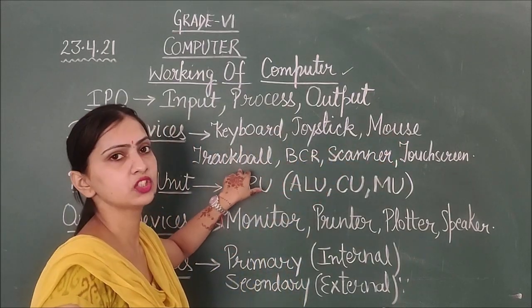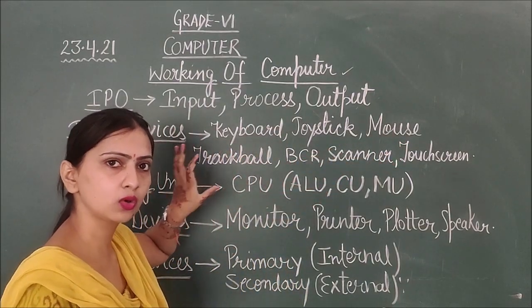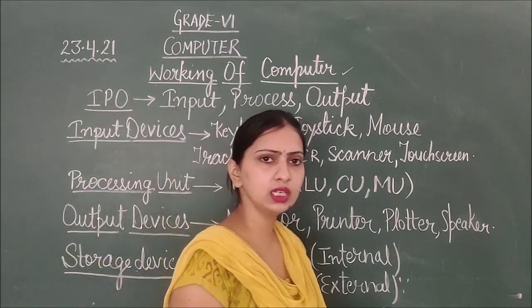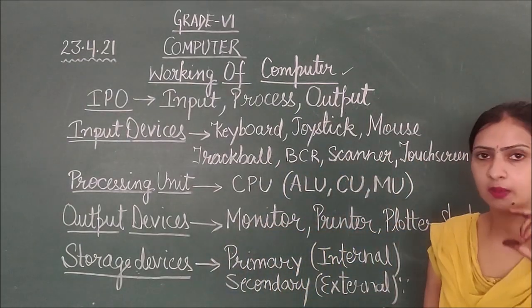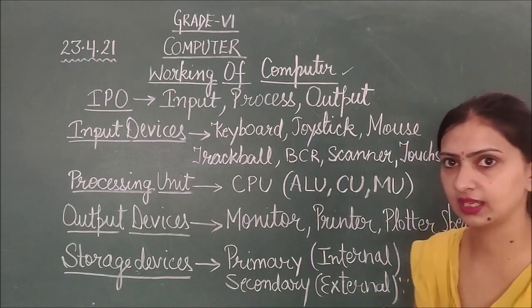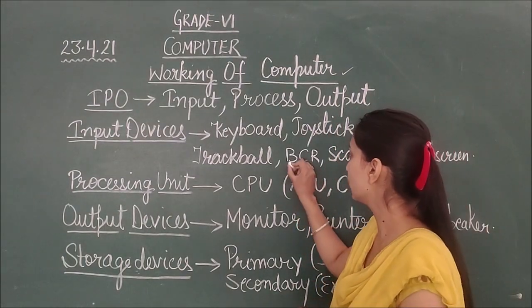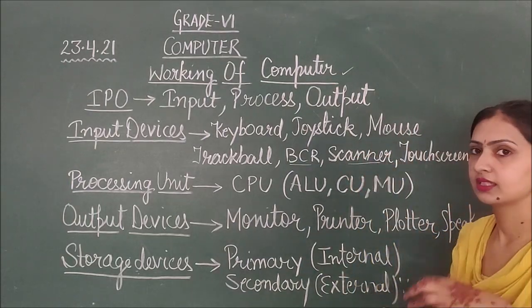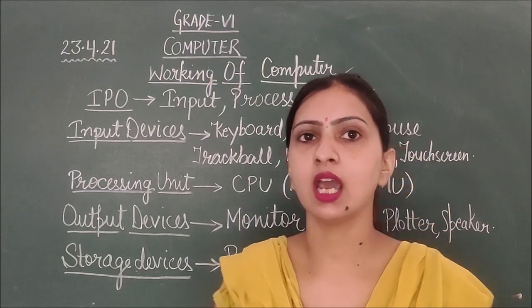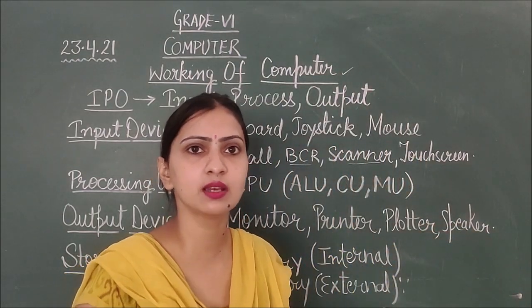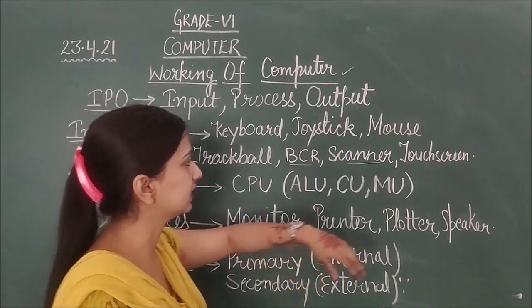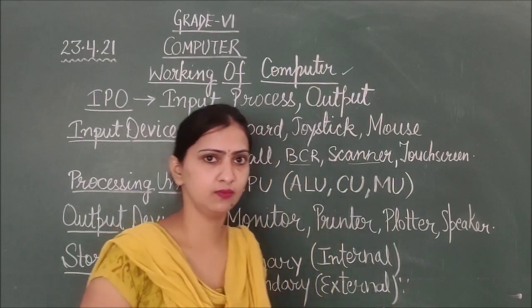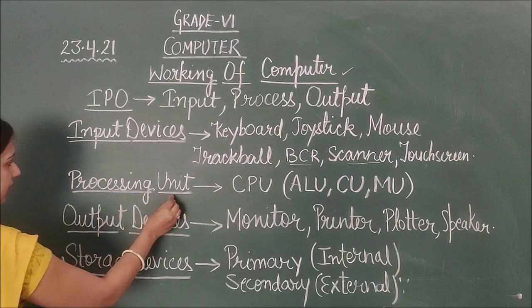Next is trackball. It is just like mouse but no scroll bar, pointing device. BCR is barcode reader. Have you seen in shopping malls you can see barcode reader, tags you can see. Next is scanner. Scanner is used to scan the printed output and it saves in our system in digitalized form.